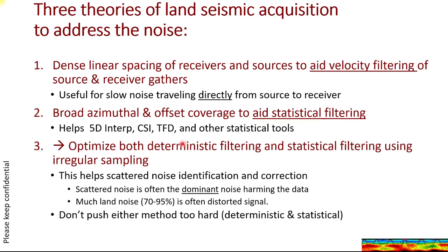There are three theories of land seismic acquisition to address noise. I'm going to review two older approaches and then propose a third approach. The first older approach, which existed perhaps 30 years ago, was dense linear spacing of sources and receivers to aid velocity filtering, which is generally applied in source and receiver gathers.